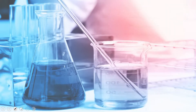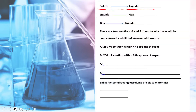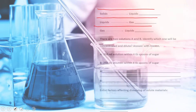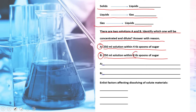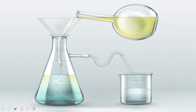Also identify and write the process responsible for the following changes: liquid turns into solid, solid turns into liquid, liquid turns into gas, and gas turns back to liquid. Additionally, there are two solutions A and B — identify which one is concentrated and which is dilute, with a reason. Solution A has 250 ml with four tablespoons of sugar; solution B has 250 ml with eight tablespoons of sugar. Finally, enlist the factors affecting the dissolving of solute. Pause the video and quickly complete the worksheet.